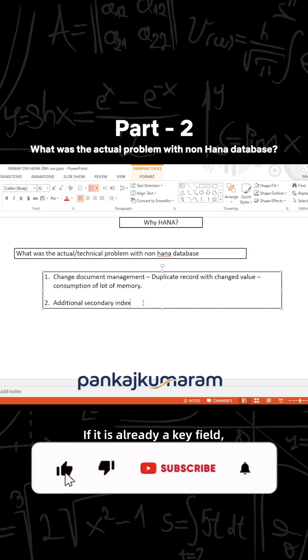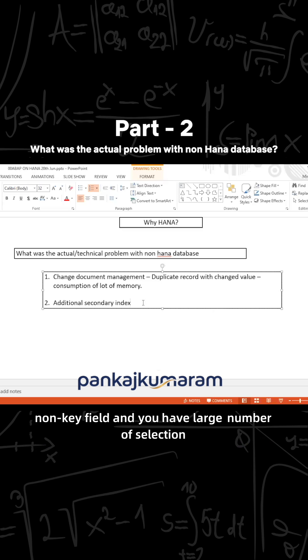If it is already a key field, automatically primary index gets created. But if it is a non-key field and you have a large number of selections on that non-key field, we create the secondary index.